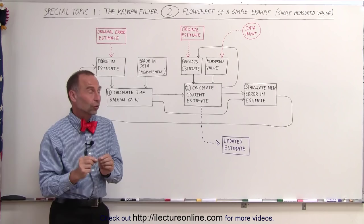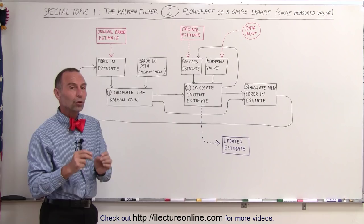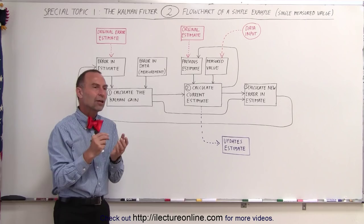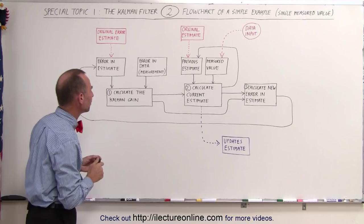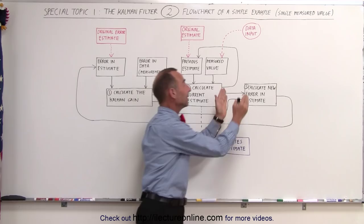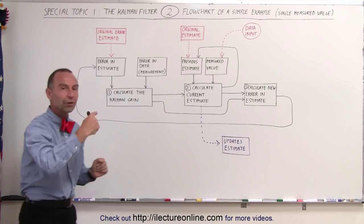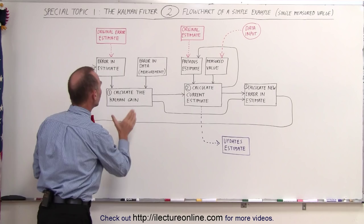I don't like to use the word error — I'd rather use the word uncertainty. In lots of literature on Kalman filtering you'll see the word error instead of uncertainty, so we'll go ahead with error, but keep in mind I think of it more in terms of uncertainty. So, three calculations: calculating the gain, calculating the updated estimate, and calculating the new error or uncertainty in that estimate — done over and over again.